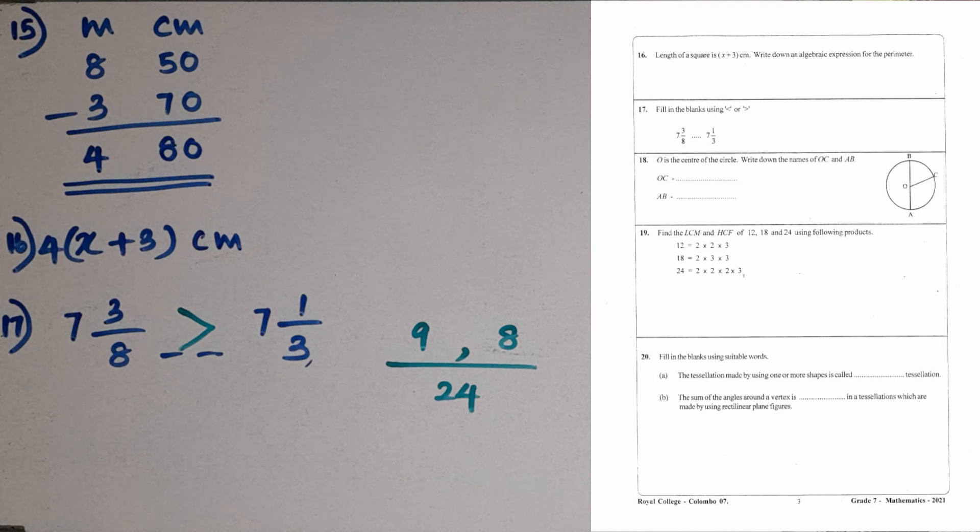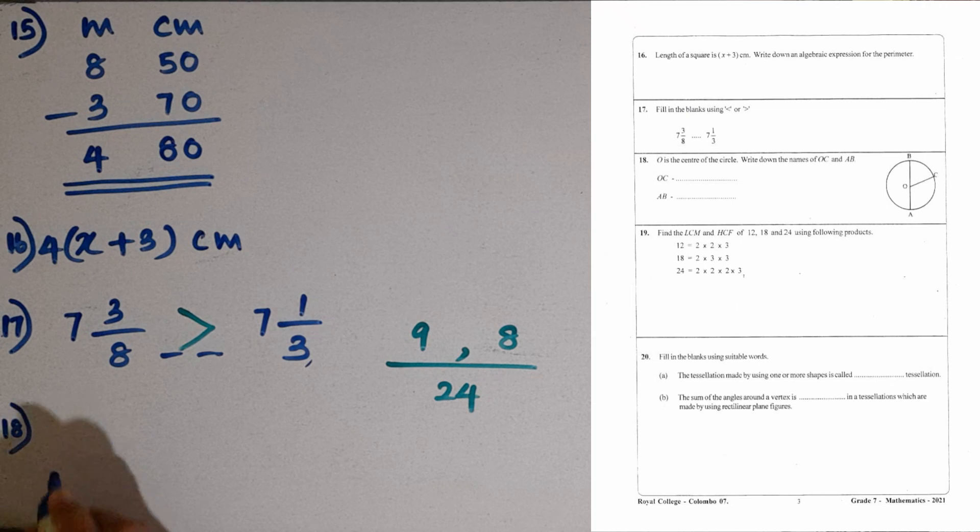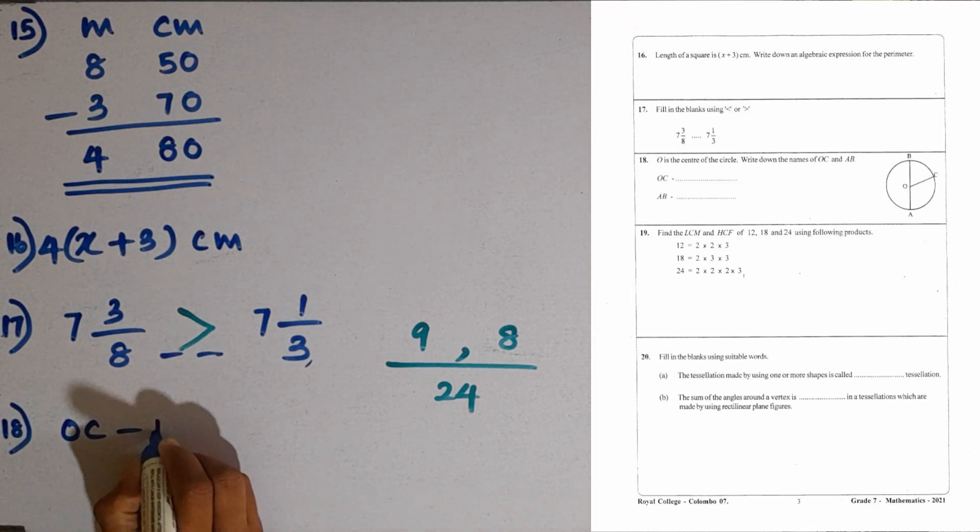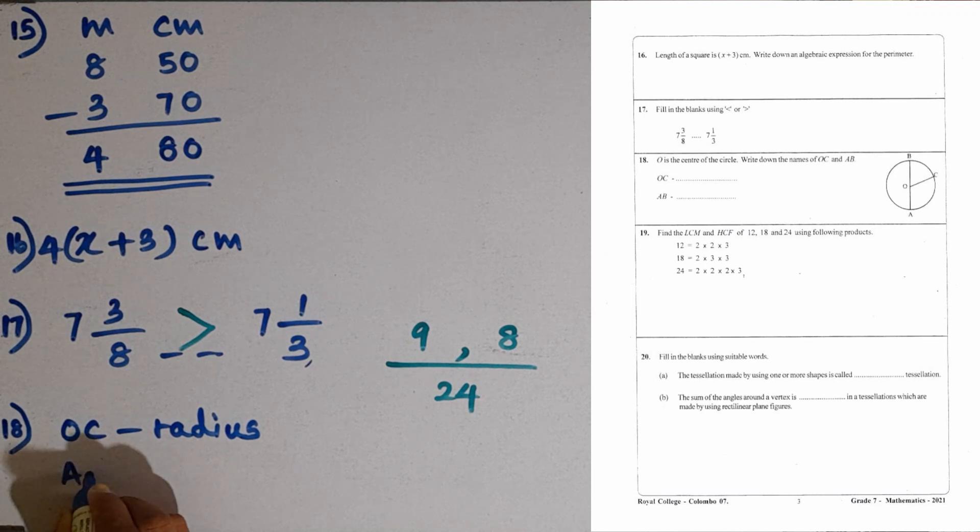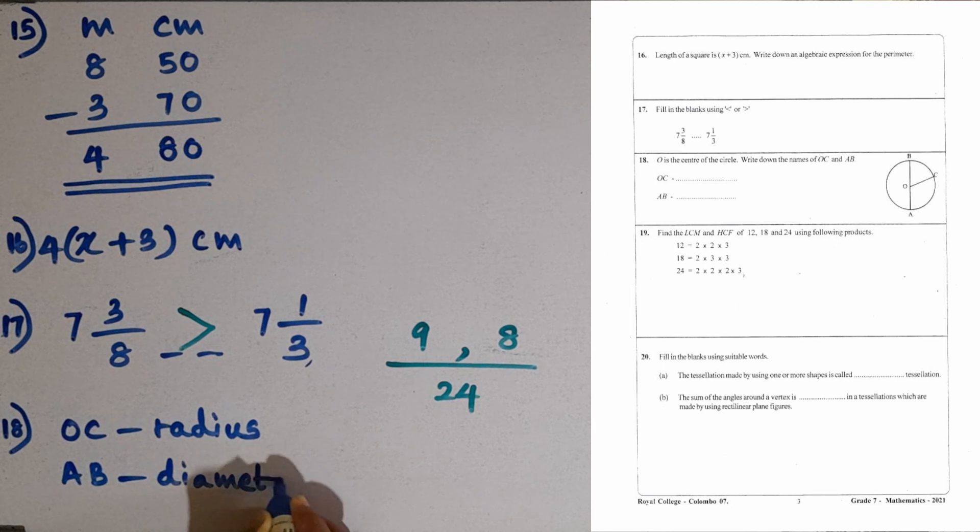Then question number 18. O is the center of the circle. Write down the names of OC and AB. OC is the radius and AB is the diameter. OC is the radius of the circle. Then AB is the diameter. Diameter is twice the length of the radius.